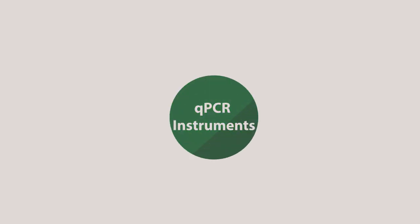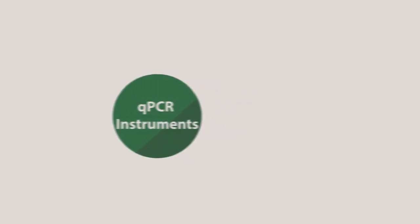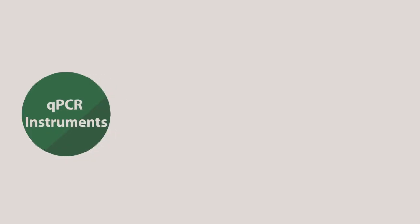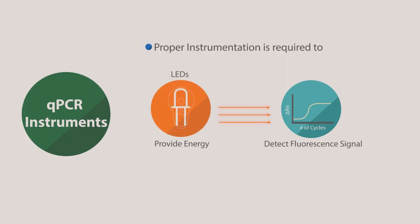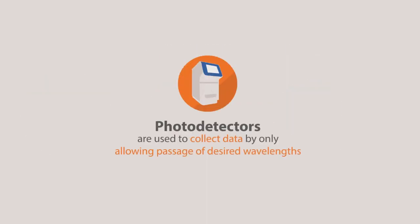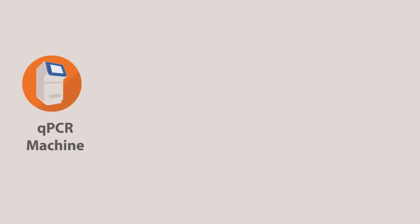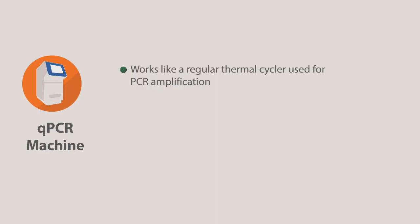Before we get into the types of qPCR, we first need to know which instruments to use. In order to get reliable and accurate results from your qPCR, proper instrumentation is required to provide energy and to detect fluorescent signals. There are three common ways to provide energy: lamps, LEDs, and lasers. Photo detectors are used to collect data by only allowing passage of desired wavelengths. Other than the additional photo detectors, a qPCR machine works very much like a regular thermal cycler used for PCR amplification. Since qPCR offers real-time output, a special computer software is needed to analyze the data it collects.